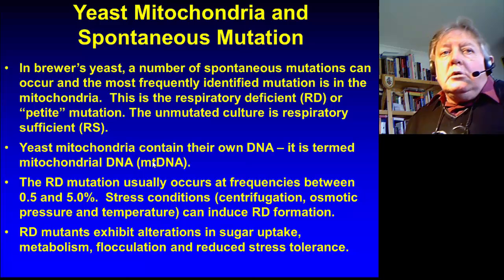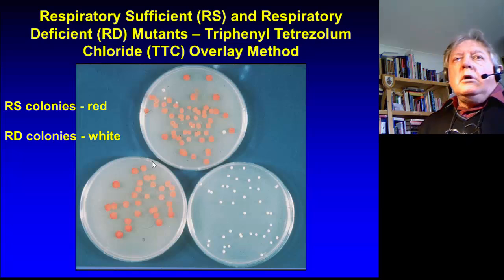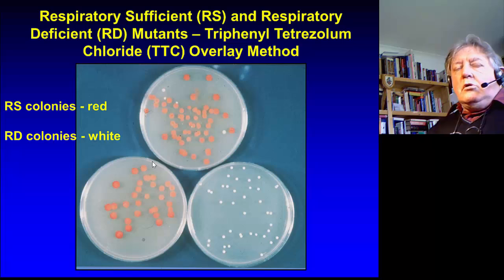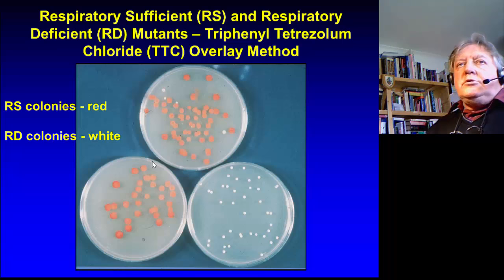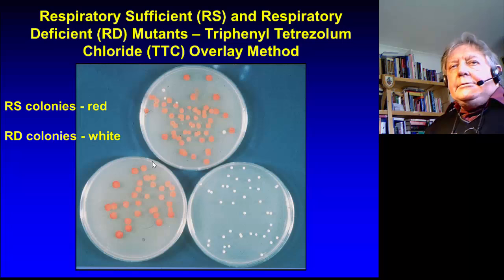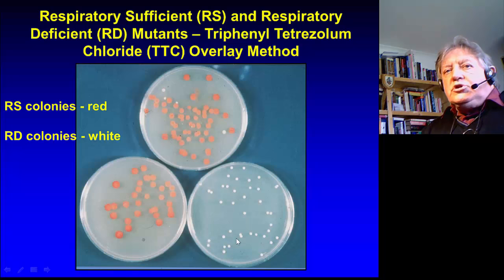RD mutants exhibit alterations in sugar uptake, overall metabolism, flocculation, and reduced stress tolerance. One way of identifying respiratory deficient cells or colonies is to use the triphenyltetrazolium chloride overlay method — you can overlay a yeast plate containing single colonies with triphenyltetrazolium chloride dissolved in agar. Under those circumstances, the respiratory sufficient wild type will stain pink or red, whereas the respiratory deficient colonies will stain white. The RD colonies are so much smaller, which is why they're called petites.